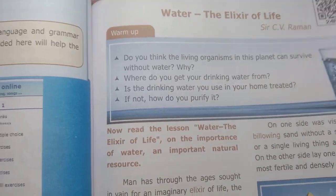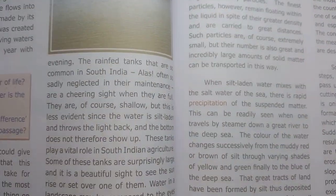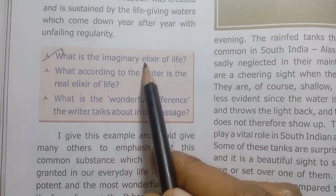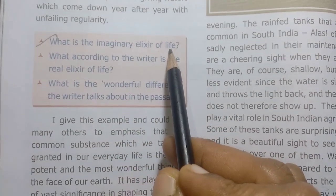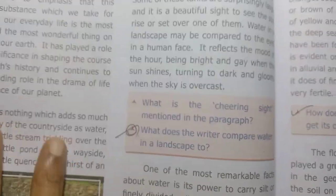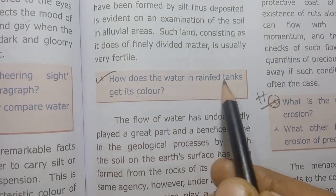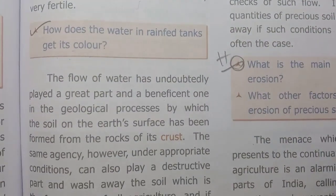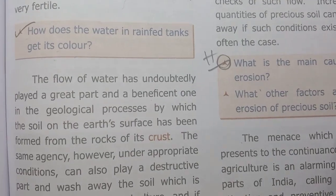Unit 5 Prose: Water — The Elixir of Life. Page number 118. What is the imaginary elixir of life? Important. What does the writer compare water to? How does the water in rain tanks get its colour? What is the main cause of soil erosion? — previous year half-yearly question.